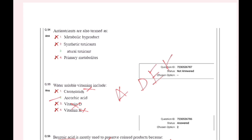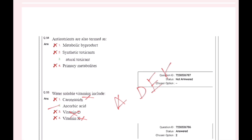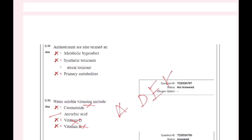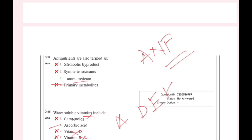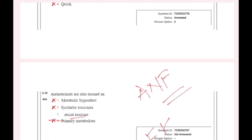Anti-nutrients are also termed as ANF — anti-nutritional factors. Anti-nutrients are called natural toxicants. This is a natural toxicant.